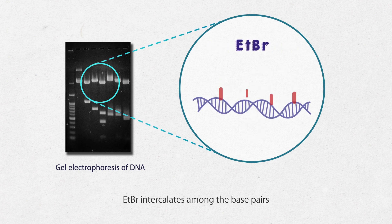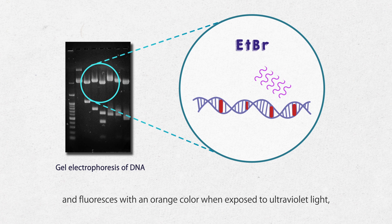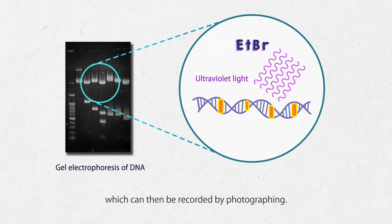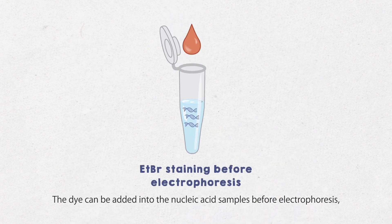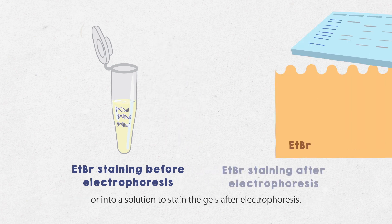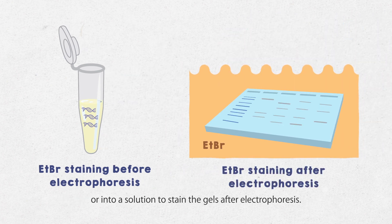EtBr intercalates among the base pairs and fluoresces with an orange color when exposed to ultraviolet light, which can then be recorded by photographing. The dye can be added into nucleic acid samples before electrophoresis or into a solution to stain the gels after electrophoresis.